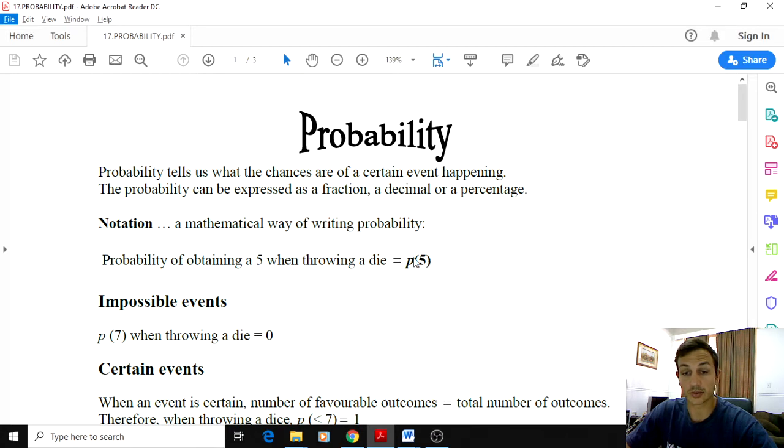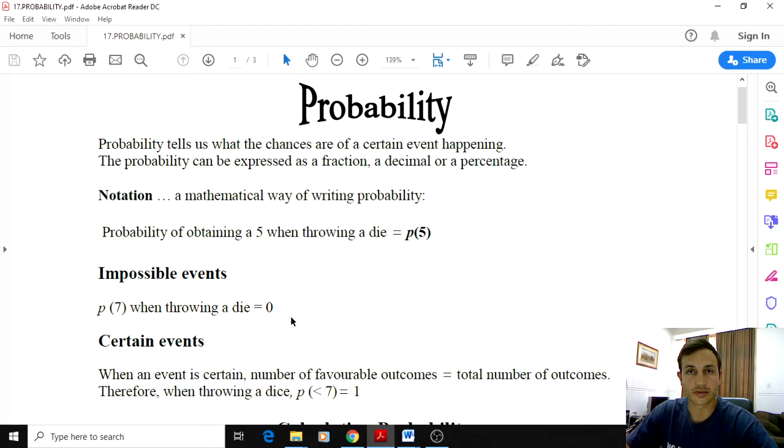So that's not the answer, we still need to calculate the probability. Obviously a die has six sides, so the probability is going to be 1 over 6. The probability of throwing a 7 is 0 because there are no 7s on a die.